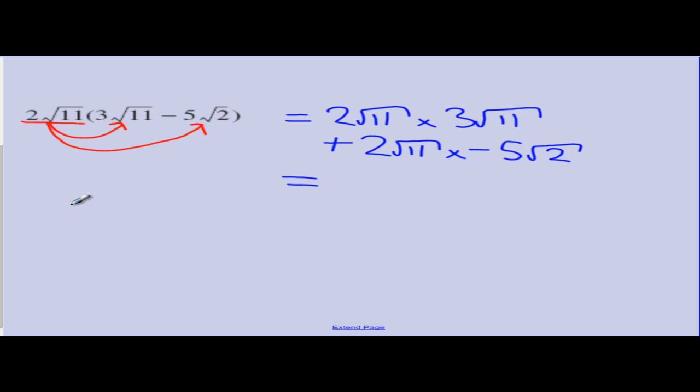Alright, let's multiply these out. Whole number by whole number. 2 times 3 gives us 6. Surd by surd. The square root of 11 times the square root of 11. Now, this is kind of like saying the square root of 11 squared. It's being multiplied by itself. And remember, those are the opposite operation of each other. So, that becomes just an 11. So, we've got 6 times 11, plus, down the bottom, we've got the 2 times the negative 5. So, that gives us a negative 10 in that bracket, multiplied by surds by surds. So, we have the square root of 11 times the square root of 2. So, that is the square root of 22. And we will close that bracket off.